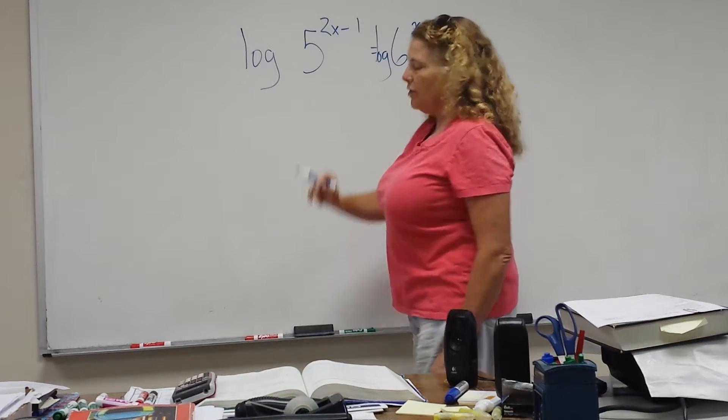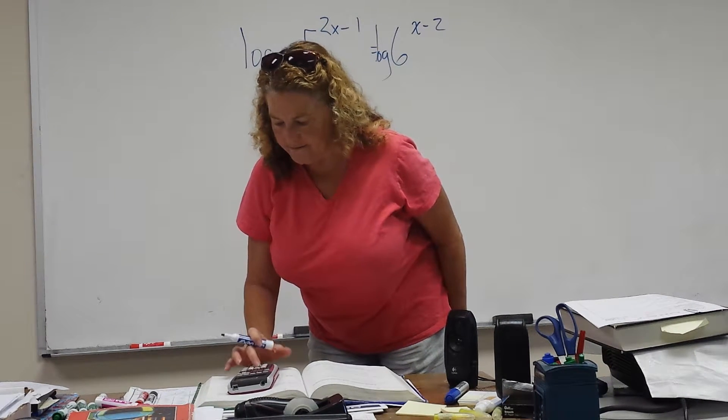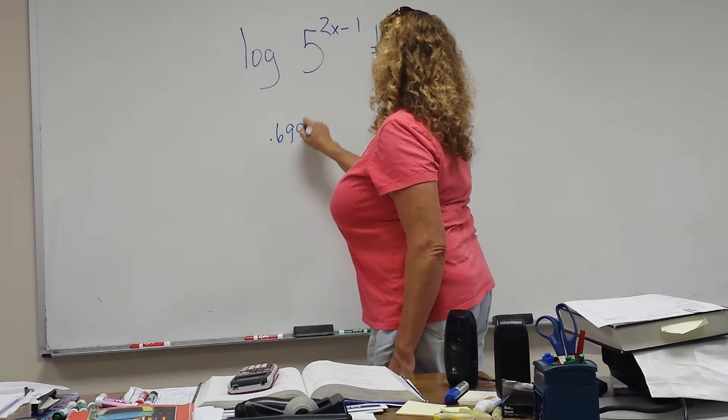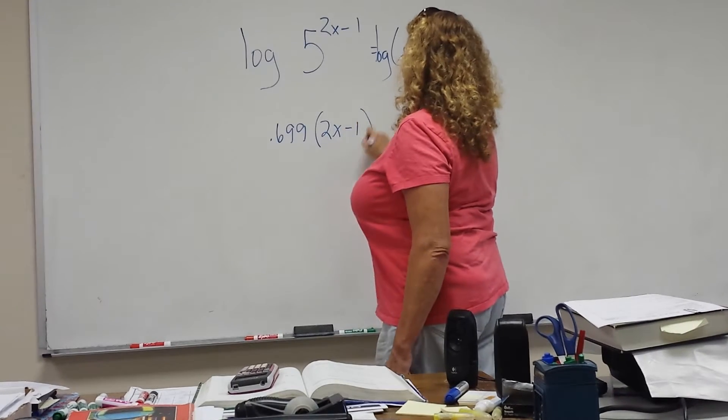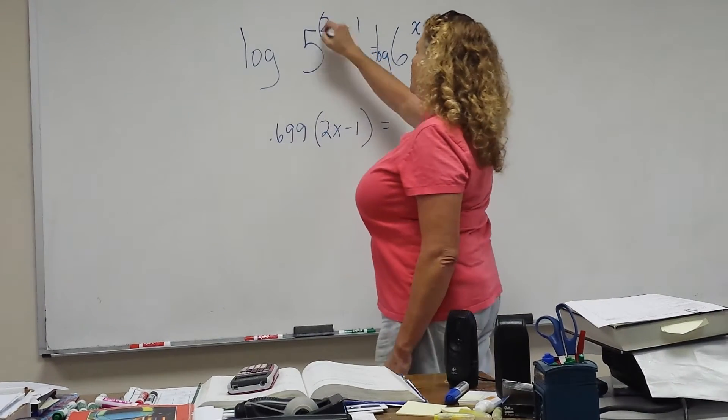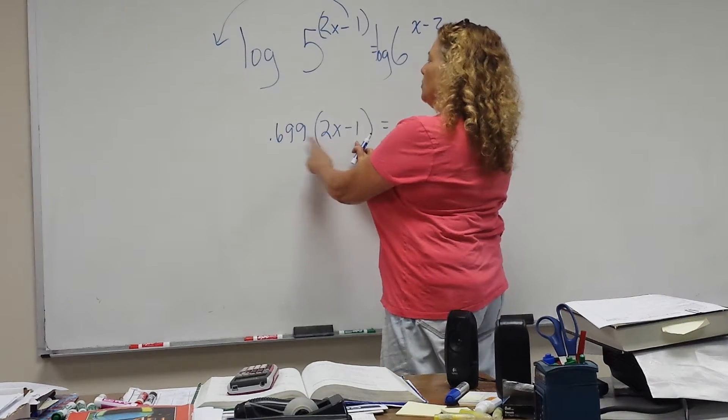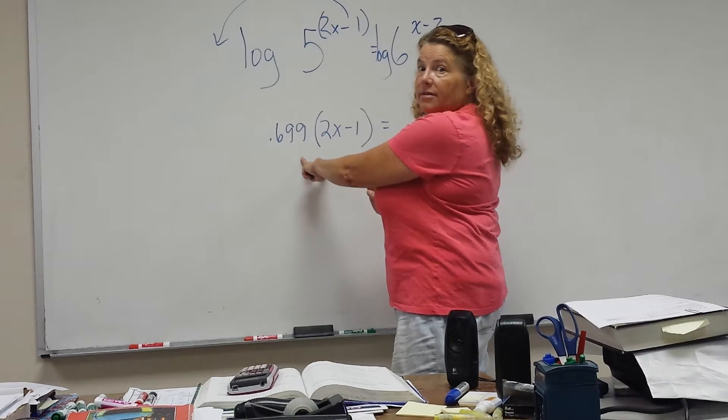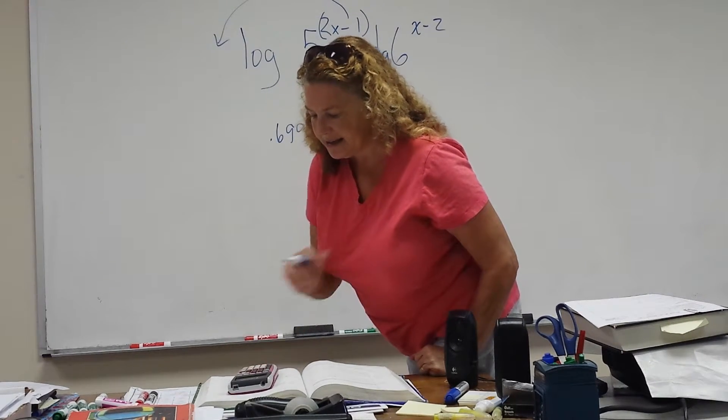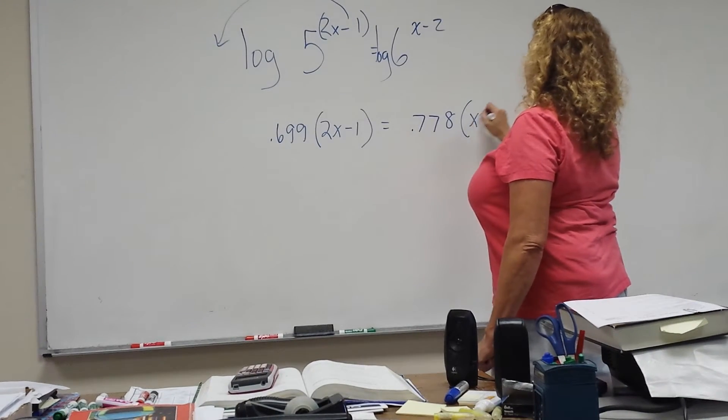So the exponent that changes 5 into that. Well, you have to do log, log 5. It would be .699, .699 times 2x minus 1. Okay? Because, remember, with log conversions, you can take and move this out front. So it's really 2x minus 1 times the log of 5. So that's how you can get that.